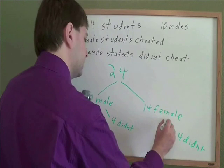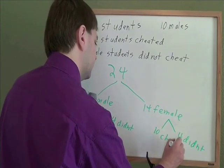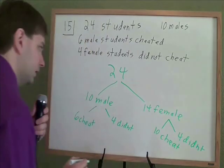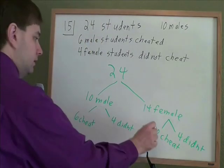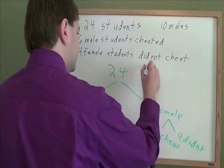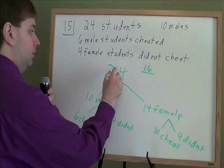Well, 14 total, 4 didn't cheat. That leaves 10 that did cheat. So, in total, how many students cheated? Well, 6 males, 10 females, total of 16 students that cheated. How many total students were there? Well, the whole 24.